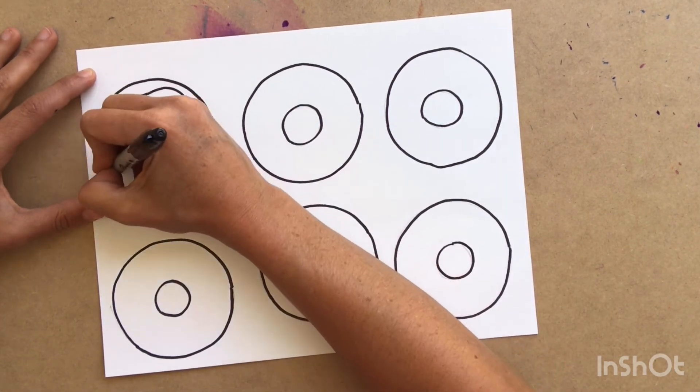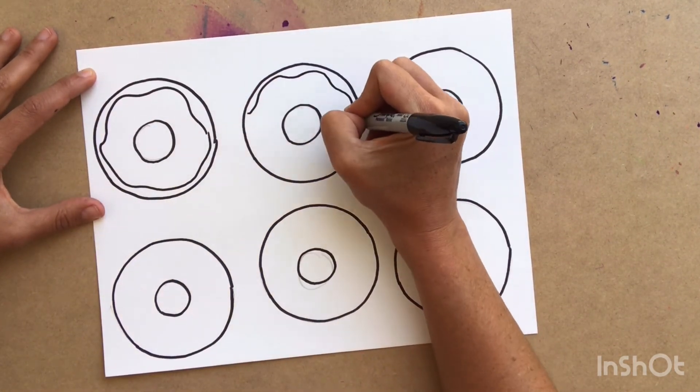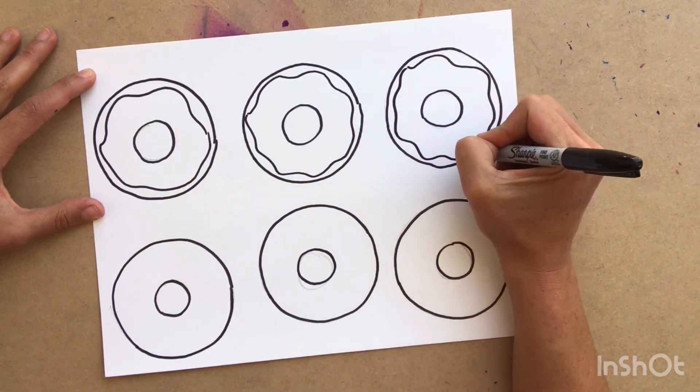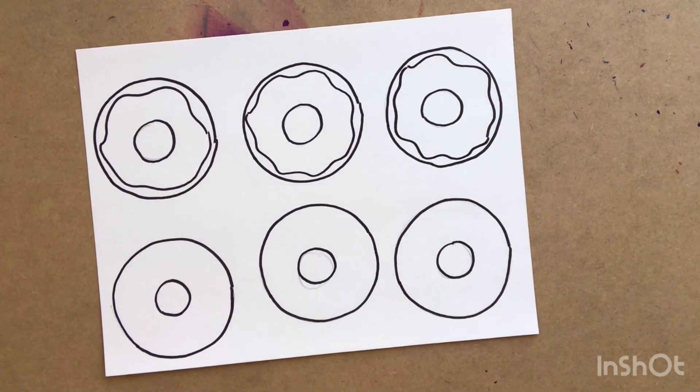Let's start decorating our doughnuts. With your sharpie, you can draw the icing with a curvy line on a doughnut, or you can leave it blank and add the icing later with a crayon. I'm going to do my doughnuts both ways.